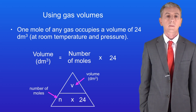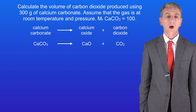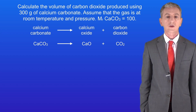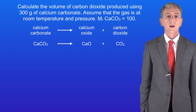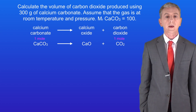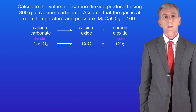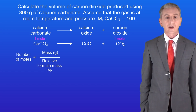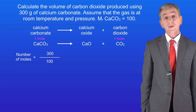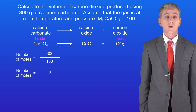Here's a sample question: calculate the volume of carbon dioxide produced using 300 grams of calcium carbonate. Assume that the gas is at room temperature and pressure. The relative formula mass of calcium carbonate is 100. From the equation we can see that one mole of calcium carbonate produces one mole of carbon dioxide. So first we need to calculate the number of moles of calcium carbonate. The number of moles is the mass divided by the relative formula mass. The mass is 300 grams and the relative formula mass is 100, so we're starting with three moles of calcium carbonate.